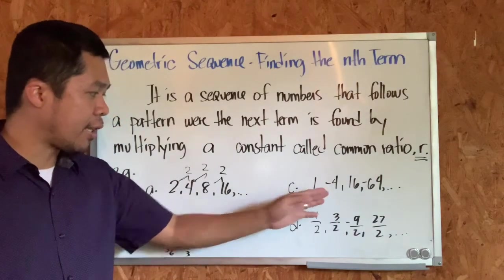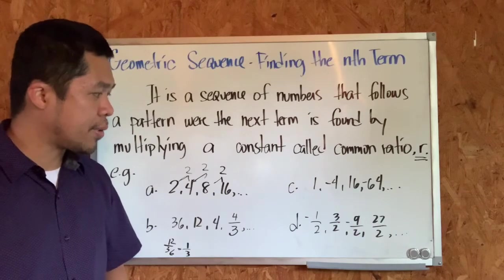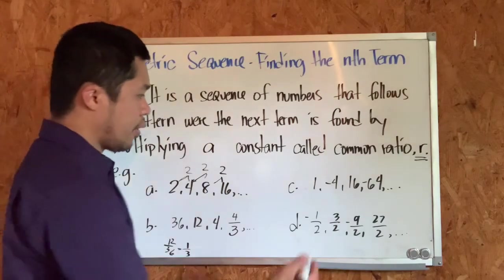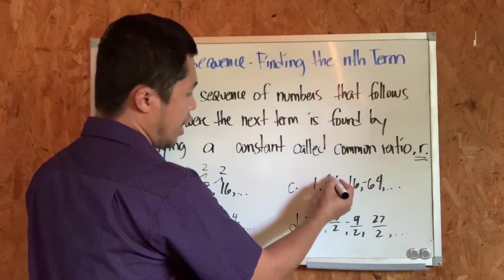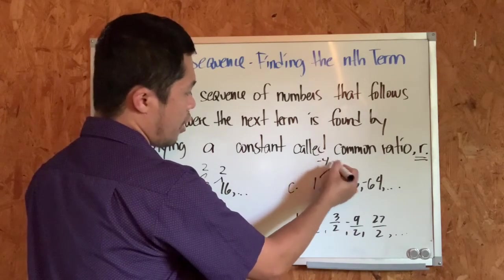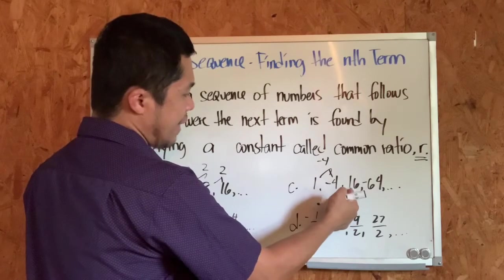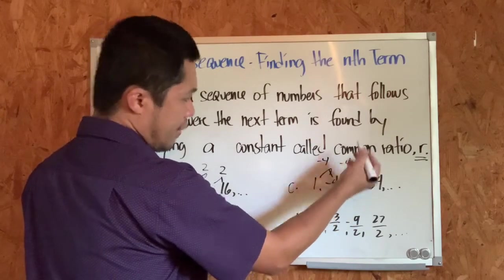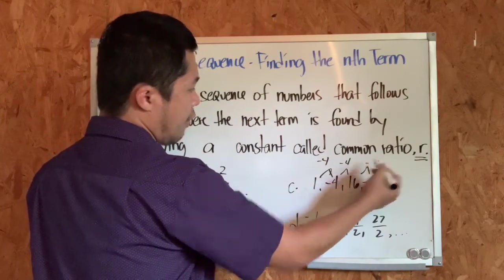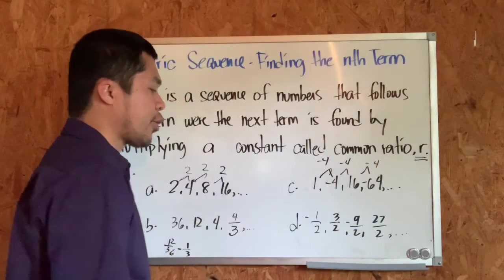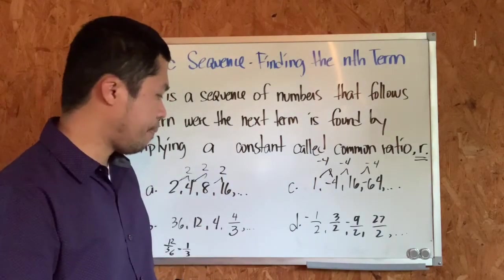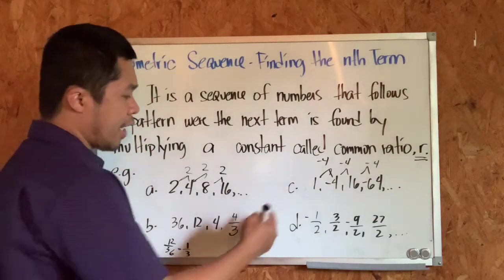For letter C, we have the sequence 1, −4, 16, and −64. Let's check the common ratio. Dividing any two succeeding terms: −4 divided by 1 is −4; positive 16 divided by −4 is −4; and −64 divided by 16 is also −4. Therefore, letter C is a geometric sequence and the common ratio is −4.